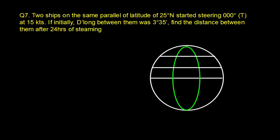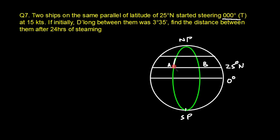Next problem: two ships are on the same parallel of latitude at 25°N — vessel A and vessel B. Both are moving on course 000°, heading toward the north pole. They travel from A and B to new positions C and D, with a D.Long between them of 3°35'.